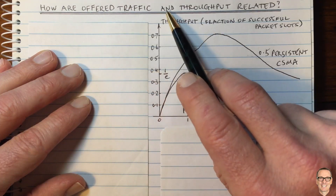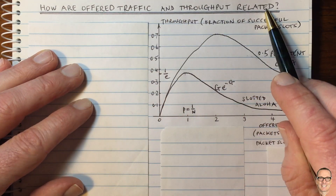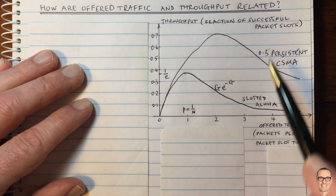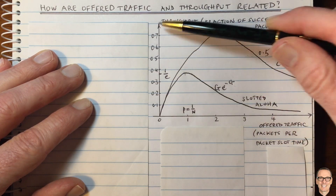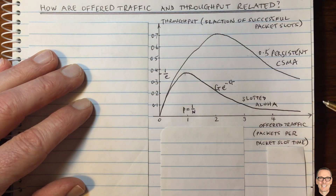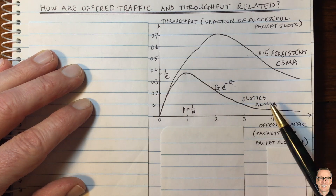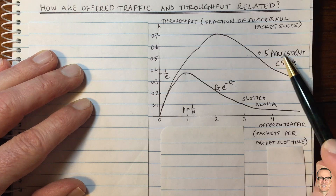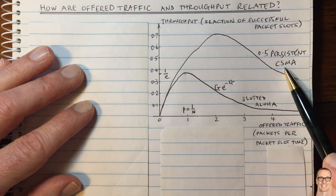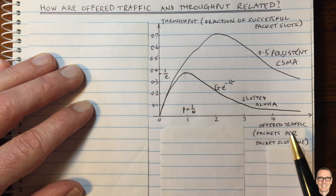How are offered traffic and throughput related? Here we have a figure with offered traffic on the x-axis and throughput on the y-axis, showing two curves: one for slotted Aloha protocol and one for 0.5 persistent CSMA. We'll mention these later, but let's first think about these axes.